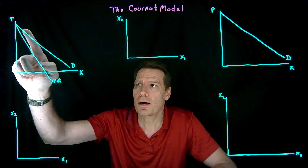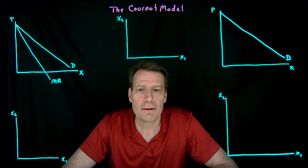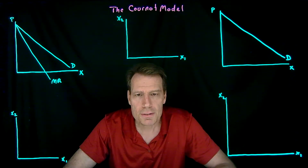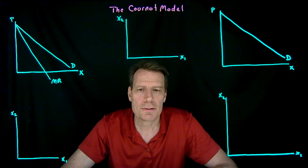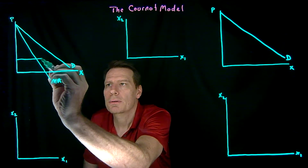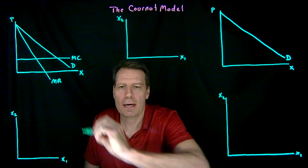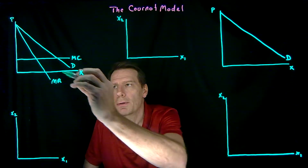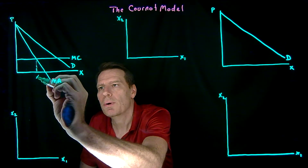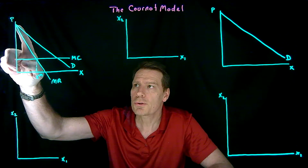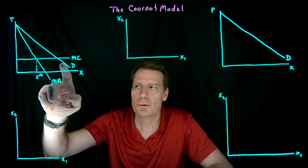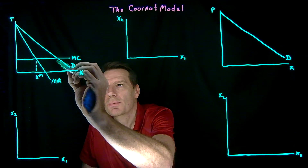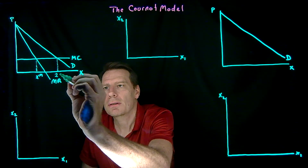Let's start with a market with a downward sloping demand curve. If this market were a monopoly, the marginal revenue curve starts at the same intercept and has twice the slope. Both firms have a constant marginal cost. A single firm would produce where marginal cost intersects marginal revenue — that's the monopoly quantity. Since the marginal revenue curve has twice the slope of the demand curve, it intersects any horizontal line at half the distance, so going out to the demand curve gives twice the monopoly quantity.